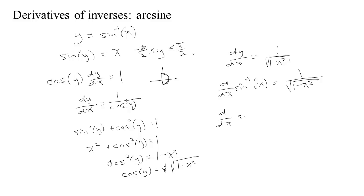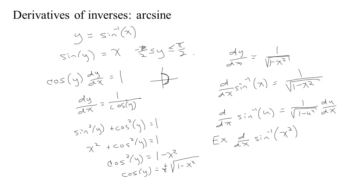According to the chain rule, if you had to take the derivative of the arc sine of some function of x — let's call it u — then you'd get the derivative of the outside evaluated at the inside times the derivative of the inside. So, for example, if someone said what's the derivative with respect to x of the arc sine of x squared, you have the arc sine of some function, so you get 1 over the square root of 1 minus the inside function squared. U in this case is x squared, so if you square that you get x to the fourth, times the derivative of the inside. The derivative of x squared is 2x. We get 2x over the square root of 1 minus x to the fourth.